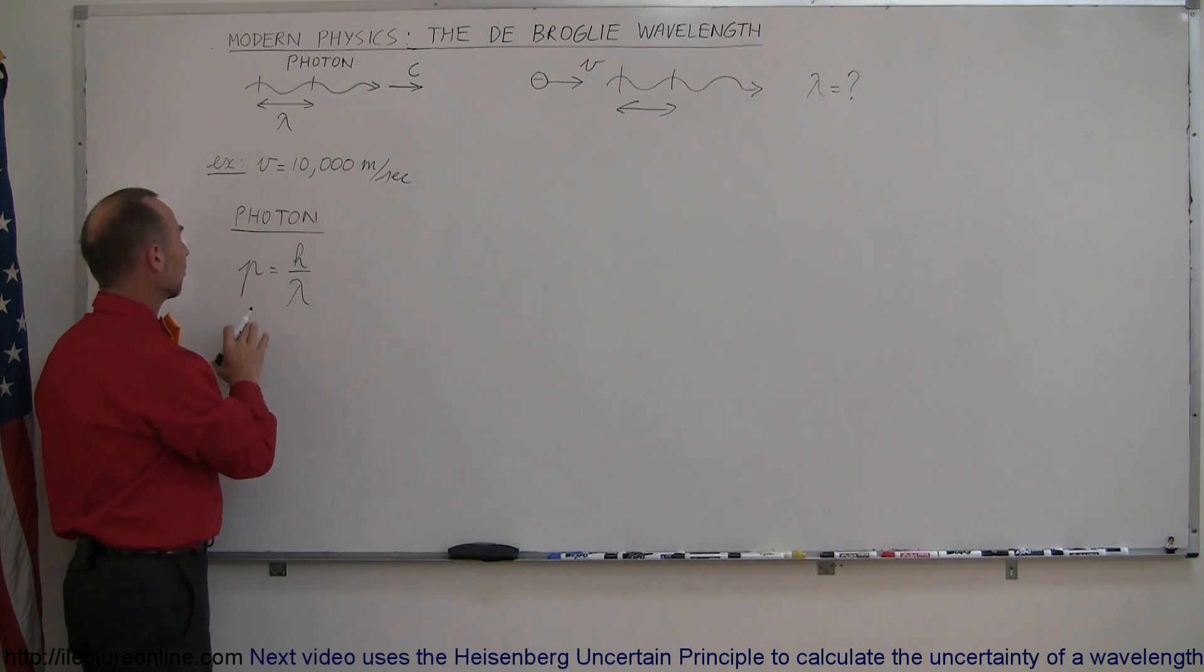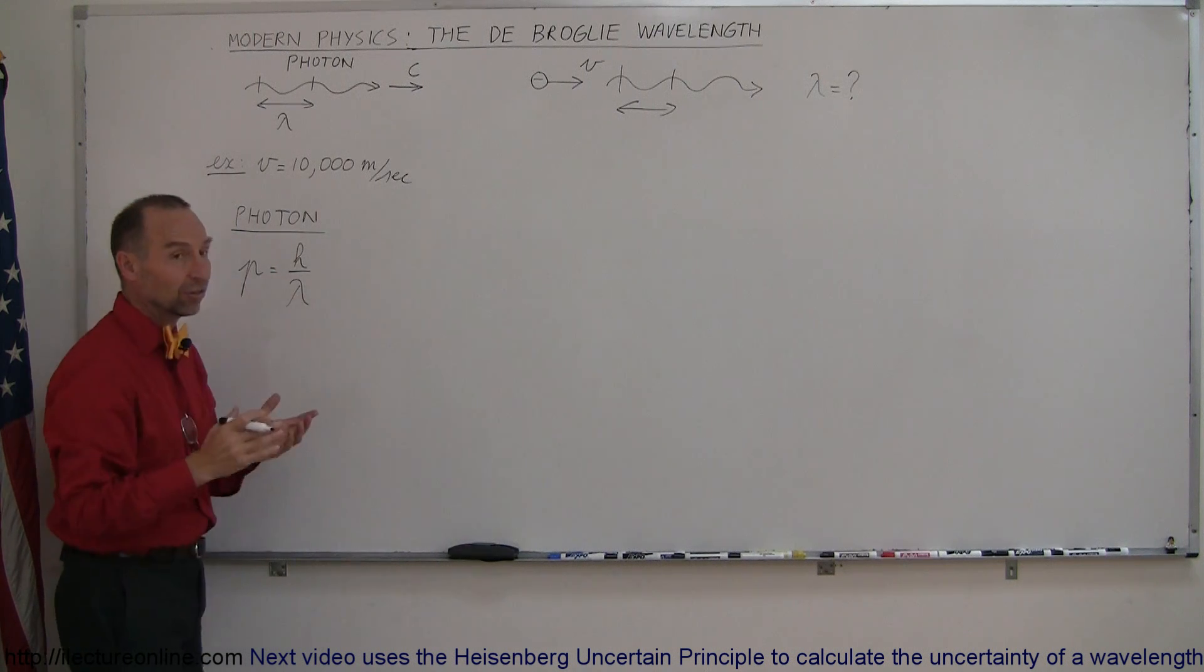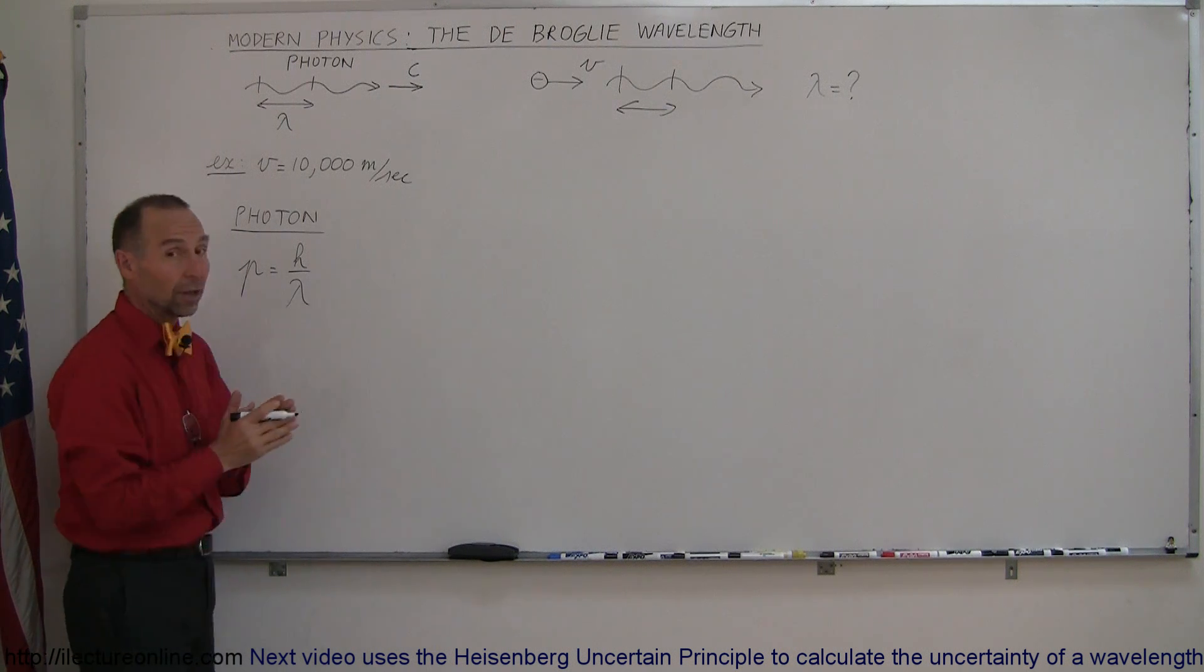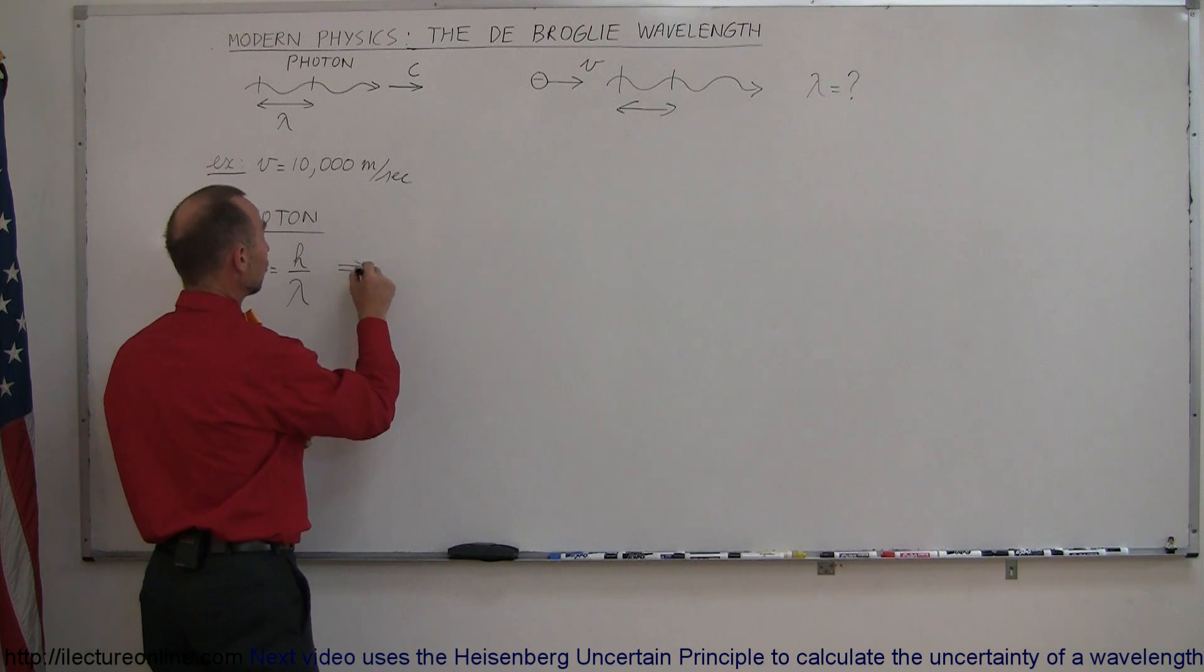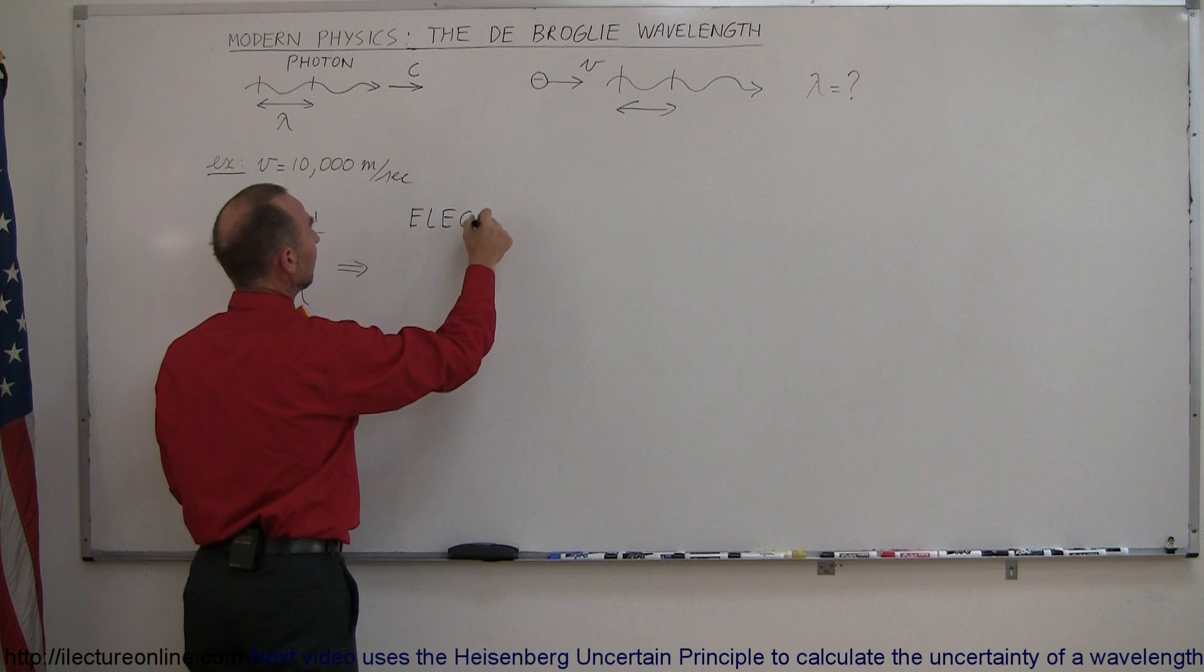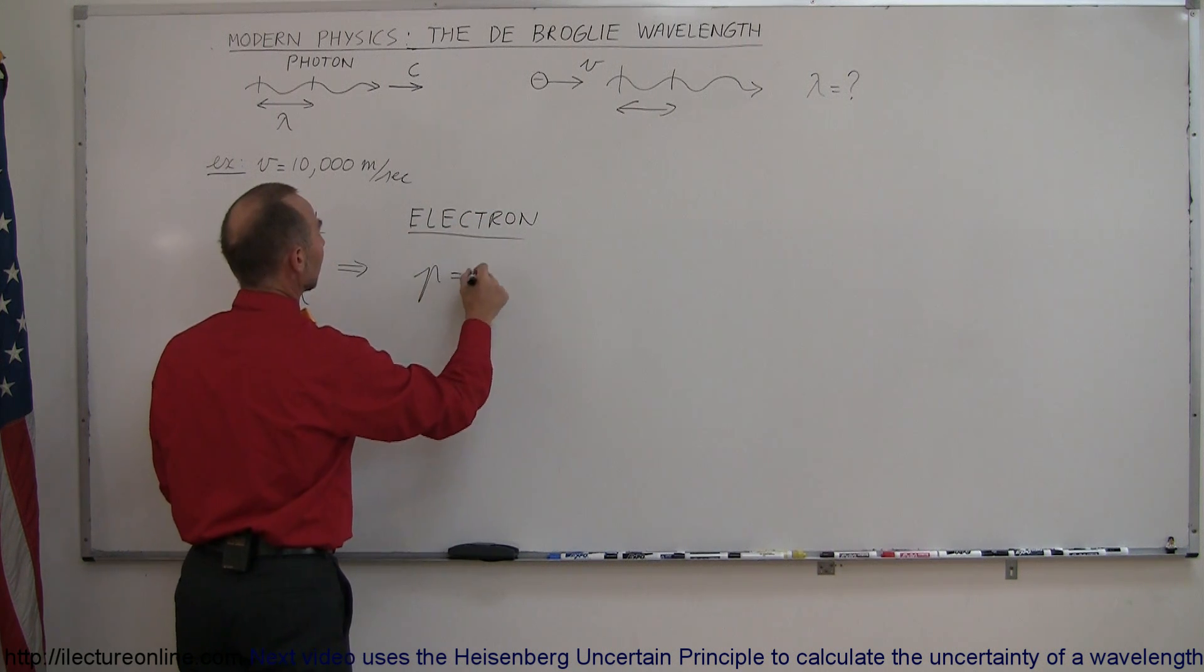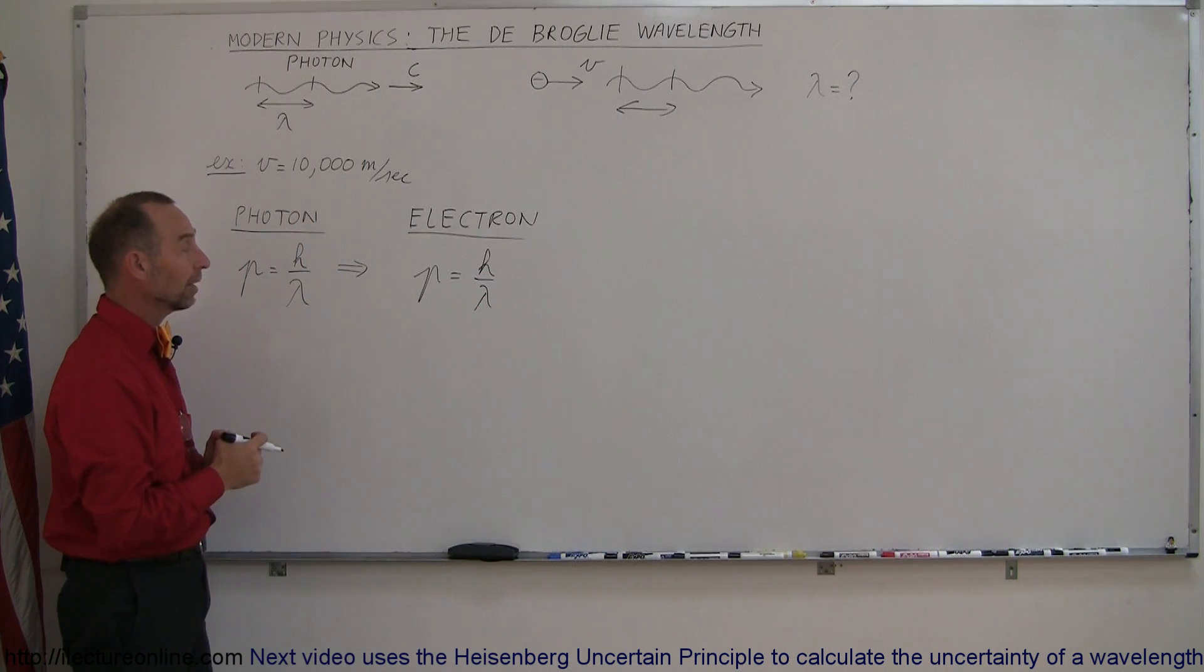So starting out with the concept that the momentum of a photon is equal to h over lambda, remember h is Planck's constant divided by lambda. And if we say that that's true for a photon then that probably must be true for an electron as well. So they made a leap of faith and they said okay if this is the same for an electron, we can also say that momentum is equal to h over lambda, assuming that a traveling electron will also have a wavelength.